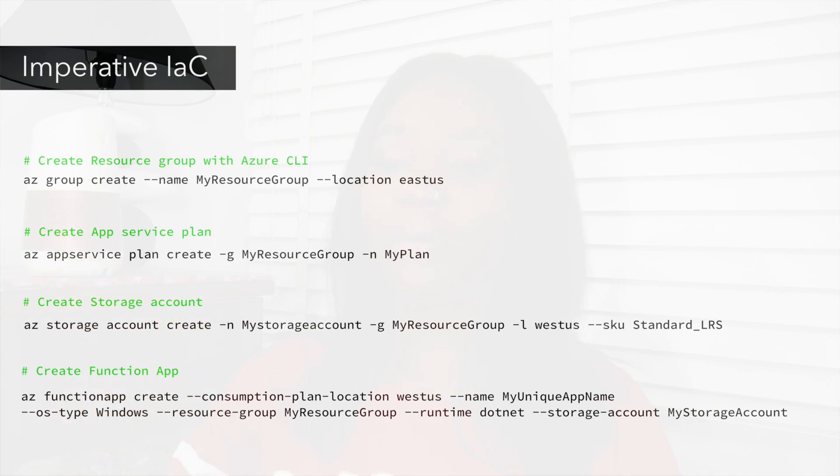You can do infrastructure as code in two ways: the imperative way and the declarative way. In the imperative way, you state what commands should be run, writing them in a CLI — create this resource group, create this app service plan, create this function app, create the storage account. You explicitly state step by step how you want your infrastructure to be. It gives you power, but it could get real complex real quick.